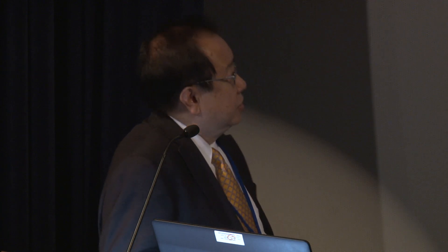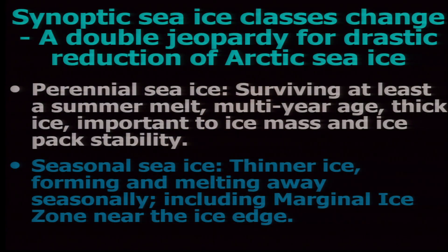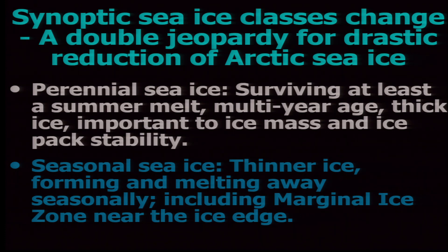Let's take a look at the Arctic sea ice. We present the synoptic sea ice class, which is our hypothesis to say that its change is a double jeopardy for the drastic reduction of Arctic sea ice. In the Arctic, we have primarily two types of sea ice: perennial sea ice, which is the old thick ice that survives at least one summer, including second-year and multi-year ice; and seasonal ice, which grows and melts seasonally every year, including marginal ice at the ice edge, which is thin, weak, and easily melted.